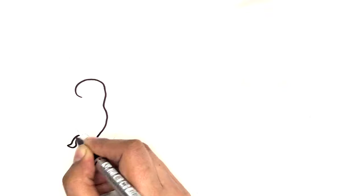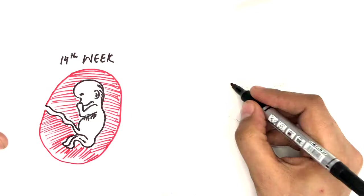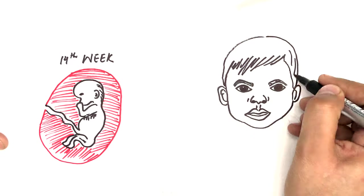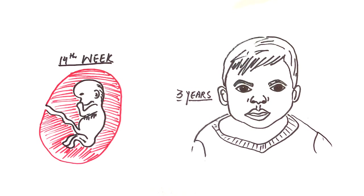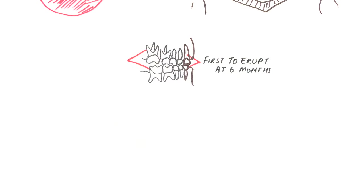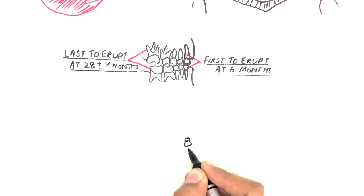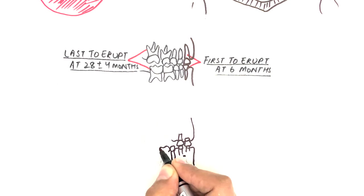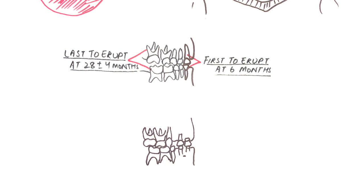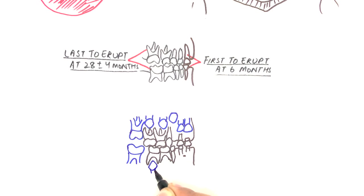Humans have two sets of teeth: the deciduous and the permanent teeth. The deciduous teeth begin at about the 14th week of intrauterine life and development is completed postnatally at three years of age. The first primary tooth begins to erupt at the mean age of six months, and the last to erupt is at 28 plus or minus four months. Then there comes a time where the primary teeth start to shed and their space is occupied by their permanent successors — this is called the mixed dentition period.